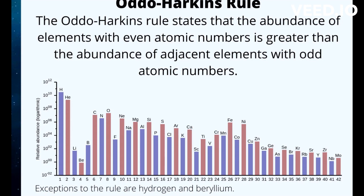Atoms form when protons and neutrons bind together and form an atomic nucleus. For most elements, this happens when the immense temperature, pressure, and gravity within a star fuses protons and neutrons together.